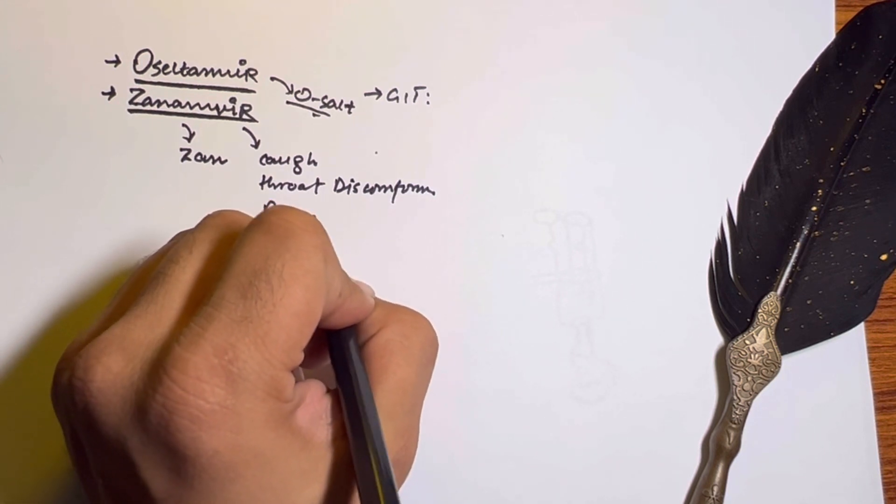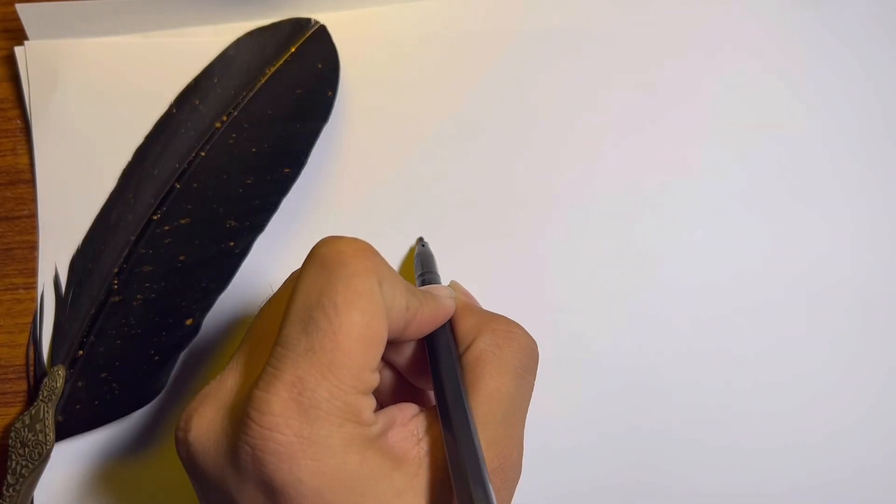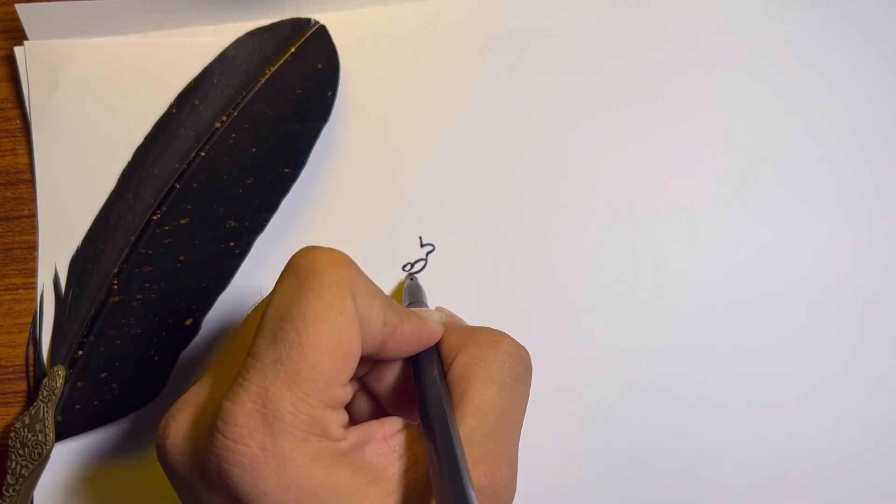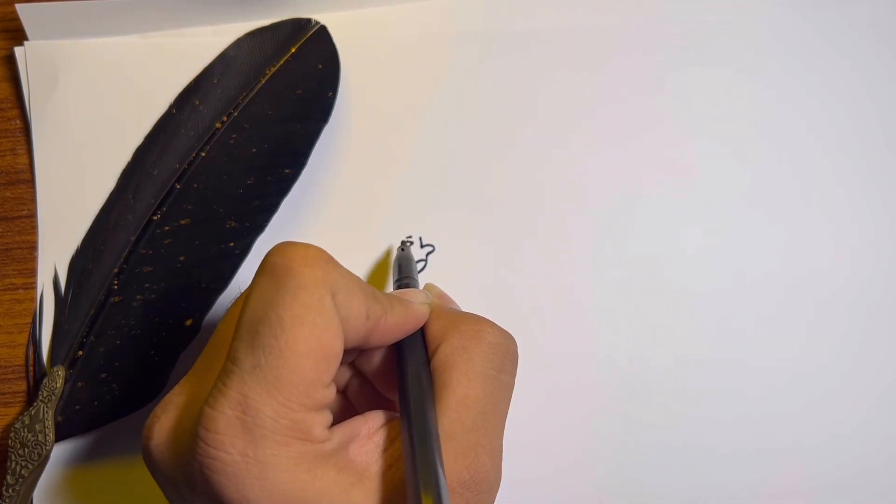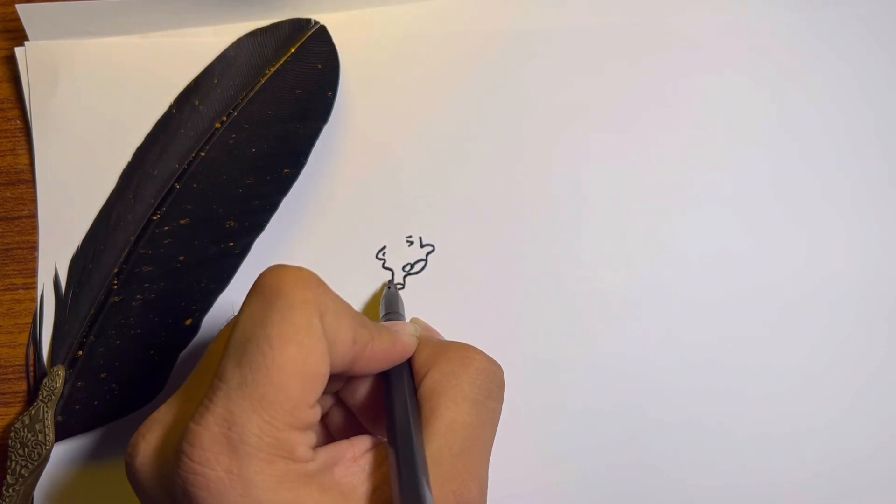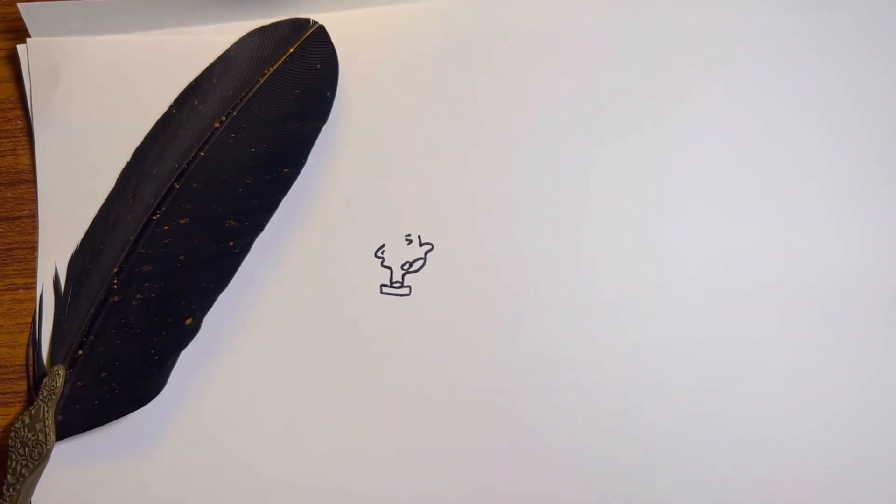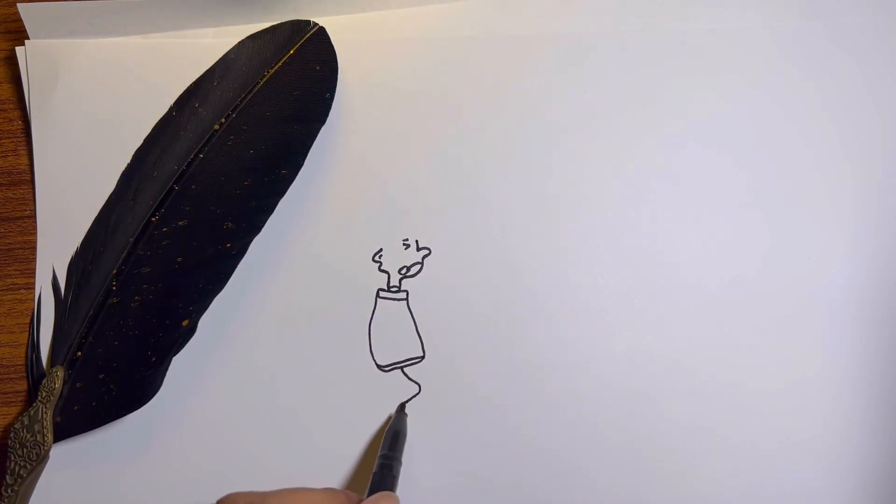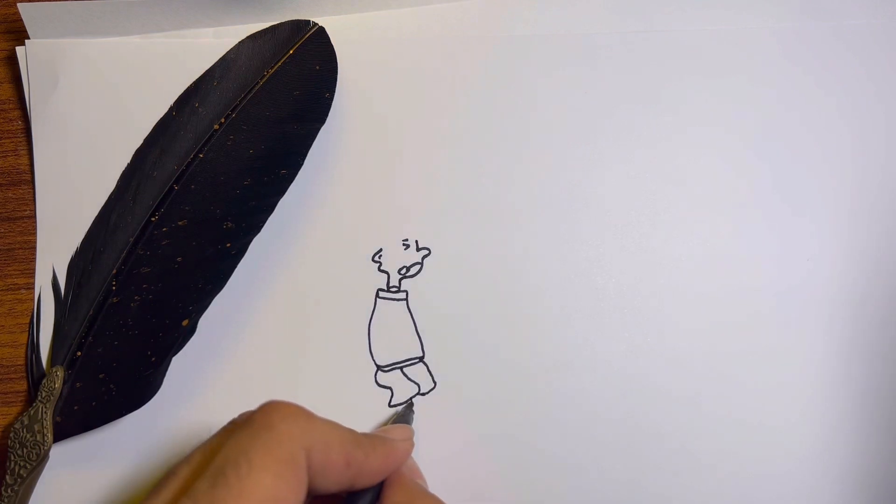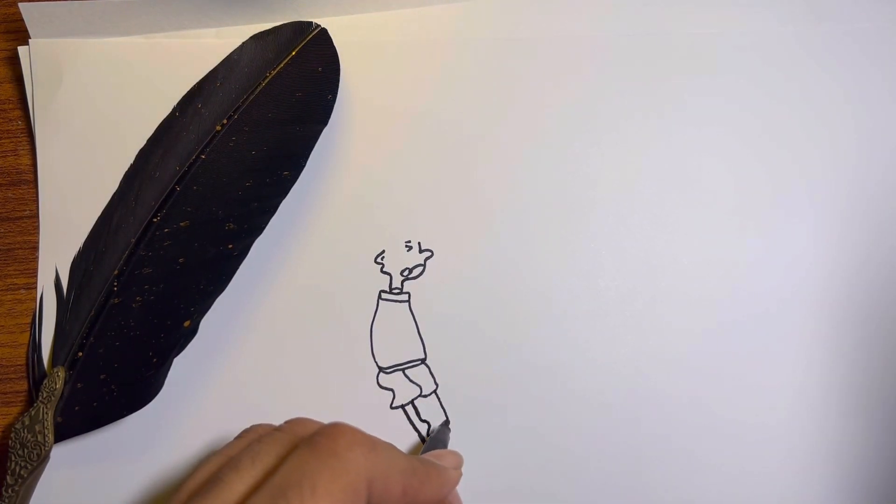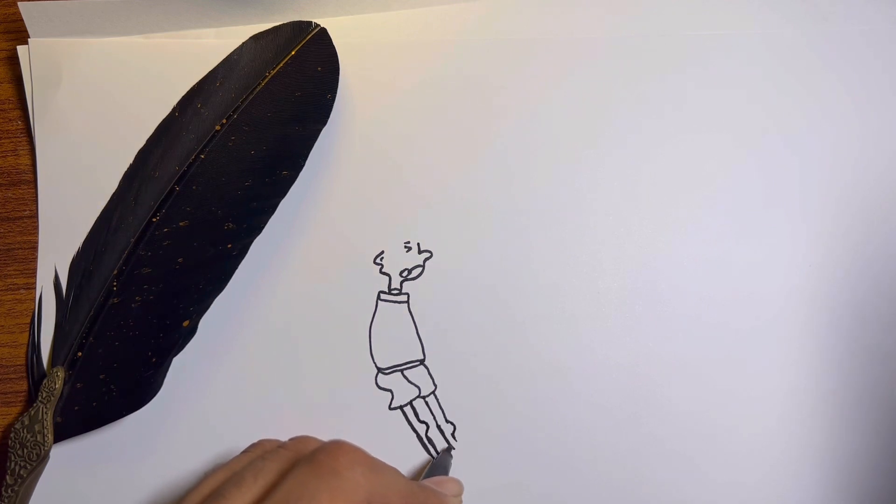The next class of anti-influenza agents is amantadine and rimantadine. We also use these drugs for Parkinson's. I am drawing a person catching a cat. The person represents amantadine and rimantadine with a root catching protons from the cat, which prevents acidification.